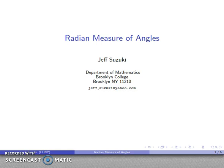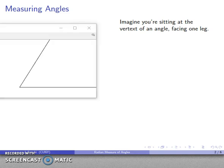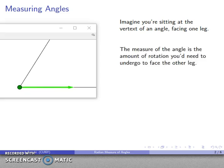We'll talk about the one true method of measuring angles — and by 'true method' I mean actually useful for things like calculus. So what do we mean by the measure of an angle? The measure of an angle emerges as follows: imagine that you're sitting at the vertex of an angle, facing along one leg. The measure of the angle is the amount of rotation needed to face the other leg.